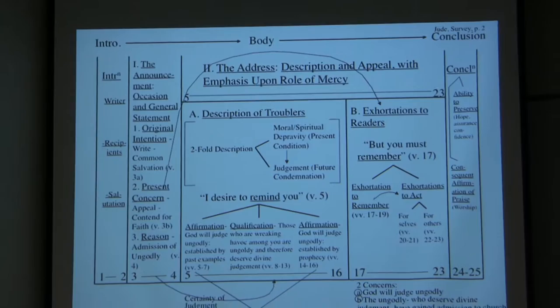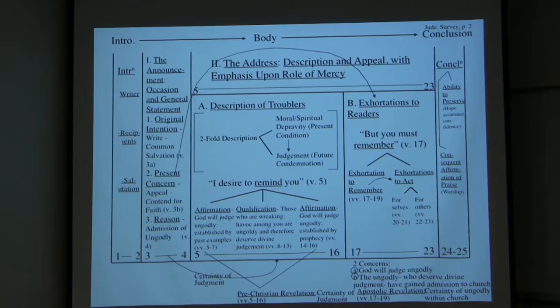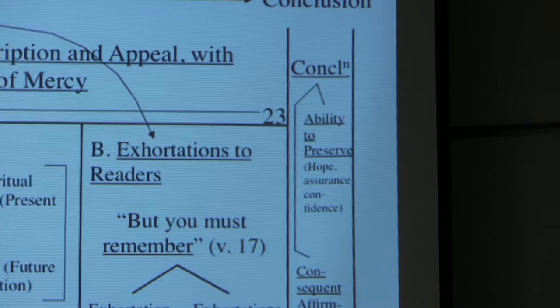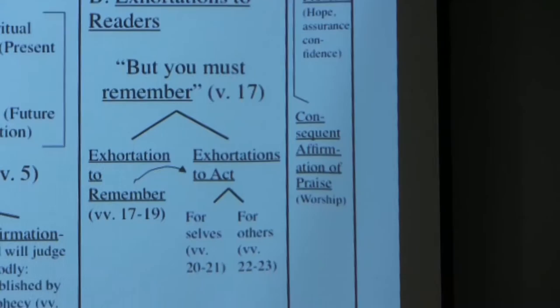The conclusion reads: 'To him who is able to keep you from falling, and to present you without blemish before the presence of his glory with rejoicing, to the only God our Savior through Jesus Christ our Lord, be glory, majesty, dominion, and authority before all time and now and forever. Amen.' So clearly that is the conclusion. We have the introduction and the conclusion, and then verses 3 through 23 would be the body.